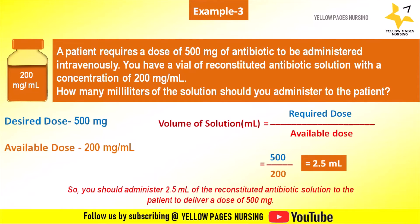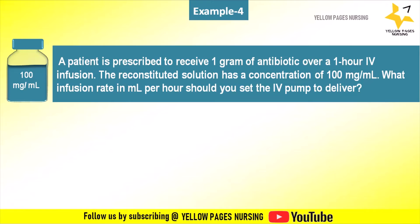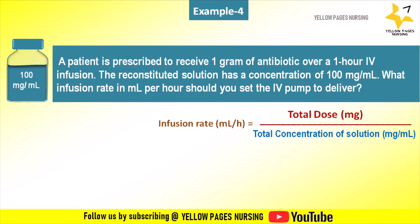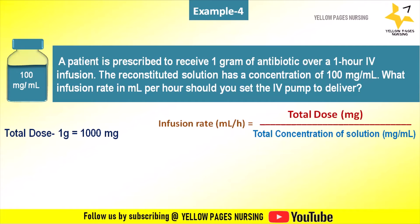So you should administer 2.5 ml of the reconstituted antibiotic solution to the patient to deliver a dose of 500 milligram. The next example: a patient is prescribed to receive 1 gram of antibiotic over one hour of IV infusion. The reconstituted solution has a concentration of 100 milligram per ml. What infusion rate in ml per hour should you set the IV pump to deliver? The formula is: infusion rate (ml/hr) = total dose (mg) divided by total concentration of solution (mg/ml). Here total dose is one gram, equal to 1000 milligram, and concentration is 100 milligram per ml.